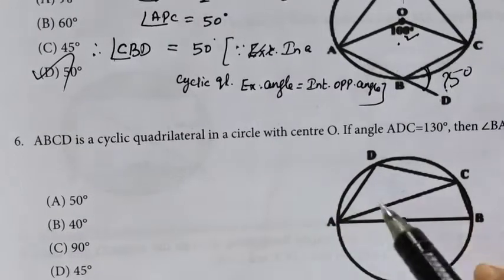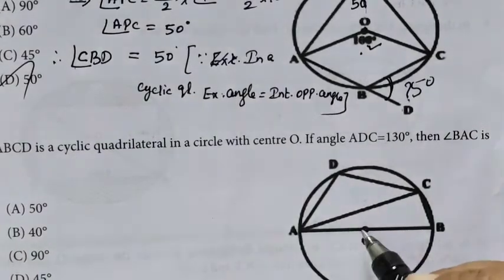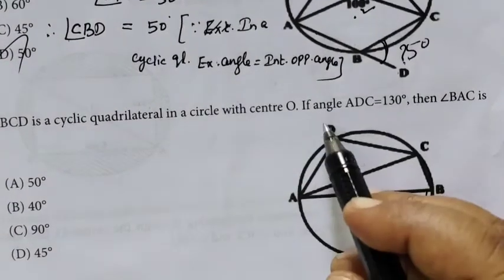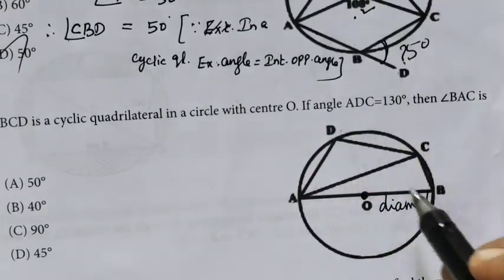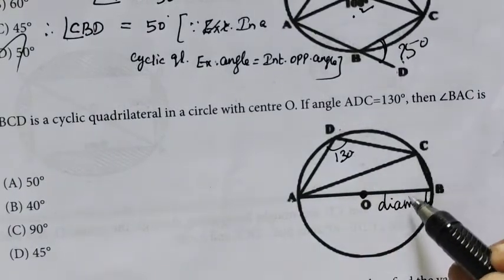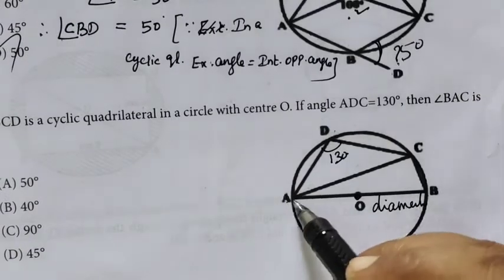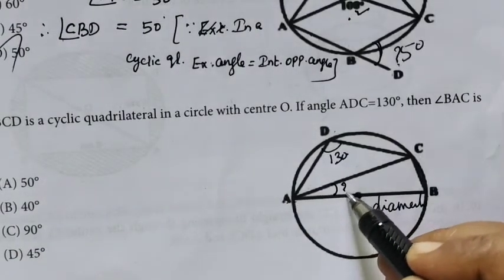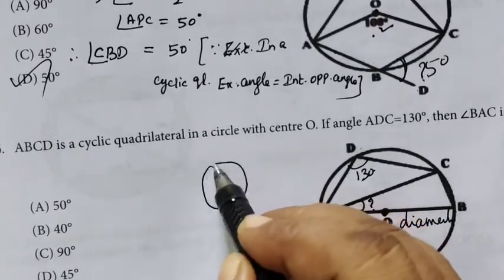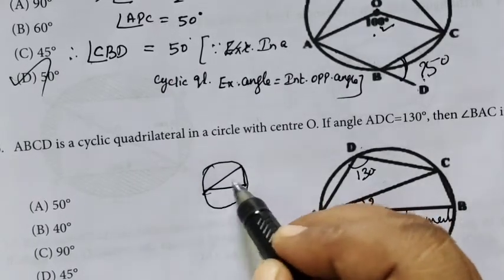ABCD is a cyclic quadrilateral in a circle with center O. What is the diameter? It is the diameter. If angle ADC equals 130 degrees, find BAC.